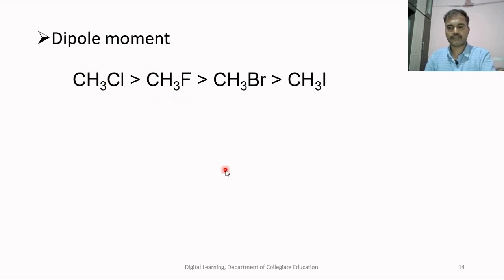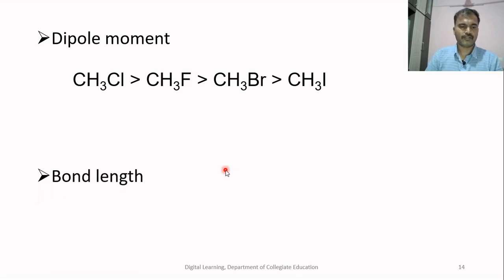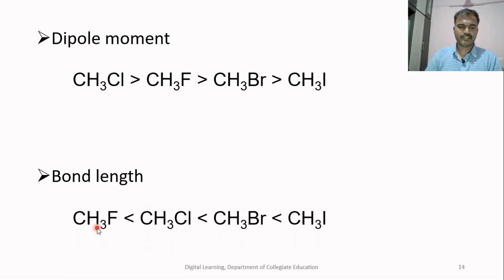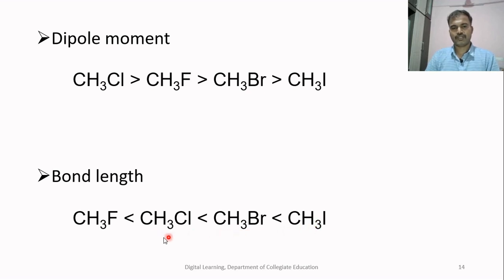The inductive effect can also be used to explain bond length in a molecule. Since the inductive effect leads to ionic character in a bond, an increase in negative inductive effect decreases bond length. For example, the C-F bond length is less than C-Cl, which is less than C-Br, which is less than C-I. Other factors also operate here but are beyond the scope of this topic.